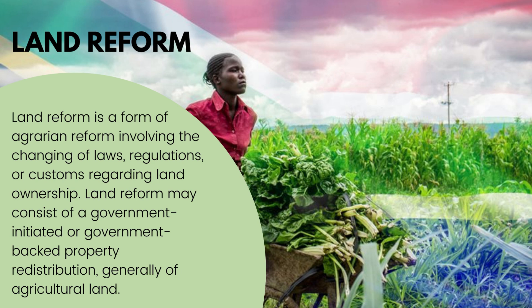In 1994, the South African government launched a new land reform program which has three components. Land reform is basically a form of agrarian reform involving changing of laws, regulations, and customs regarding land ownership. It may consist of a government-initiated or government-backed property redistribution, generally for agricultural purposes.